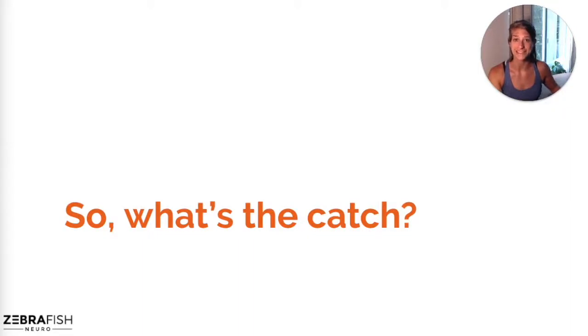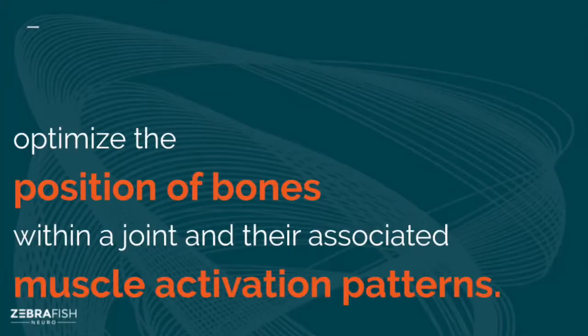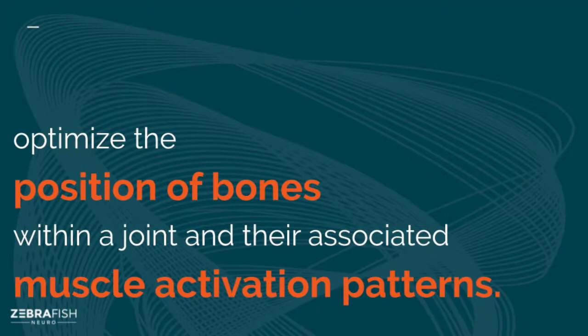So what's the catch? There are some parameters that need to happen in order for us to tap into our fascial system. We need to optimize the position of the bones within a joint and its muscle activation patterns. In order to access this fascial tensioning, the position and the way we use our shoulders needs to come into play. This takes some understanding of anatomy, so that's where we're going next.